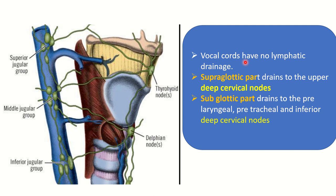Any tumor in the vocal cord usually does not metastasize through the lymphatic channel. The supraglottic part drains into the upper deep cervical lymph nodes, and the subglottic (infraglottic) part drains to the paratracheal, peritracheal, and inferior deep cervical lymph nodes. So both the supraglottic and subglottic parts drain into the cervical lymph node group.